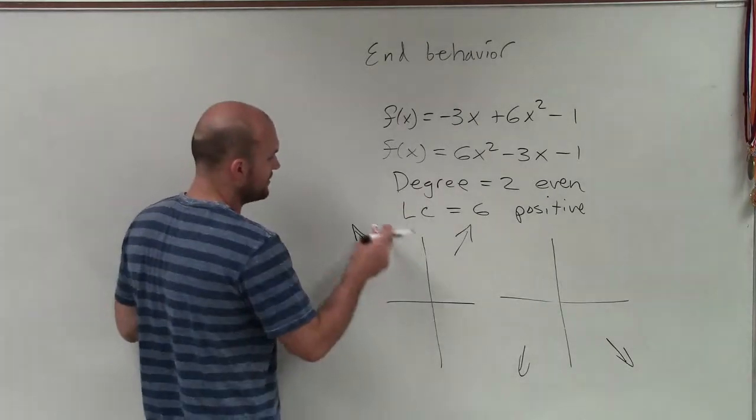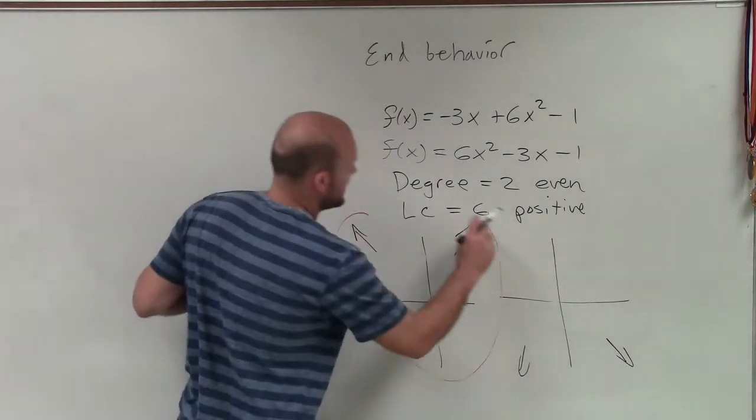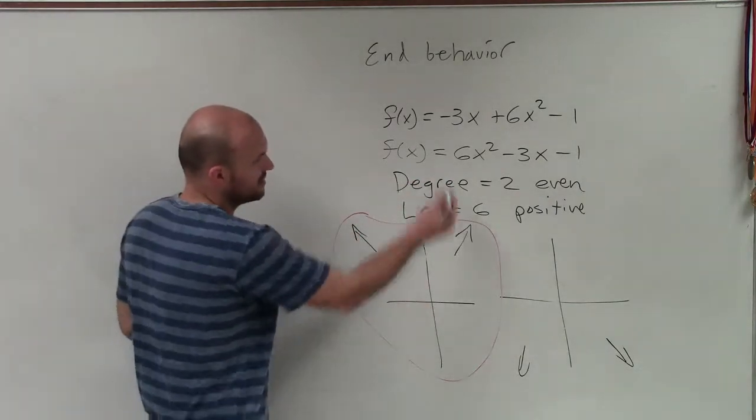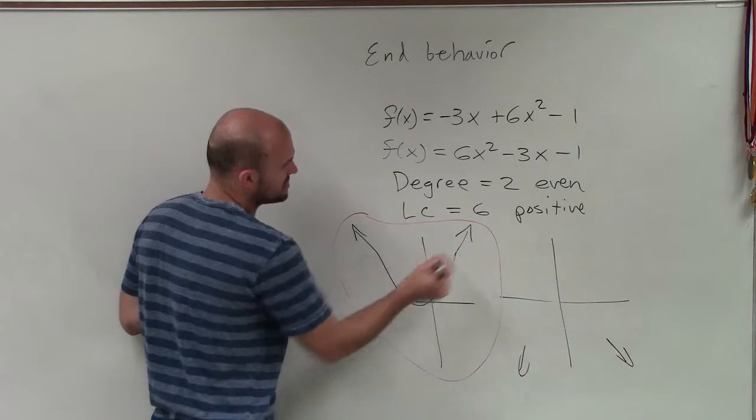Now, since this is positive, I know that this is going to be the end behavior of an even degree and positive leading coefficient. And it doesn't matter, I mean, this is a quadratic, so you know it's going to produce a parabola.